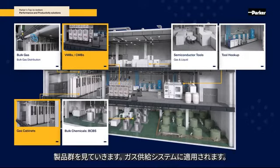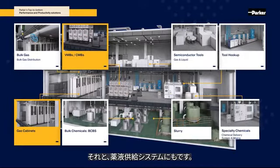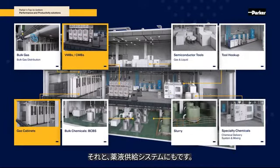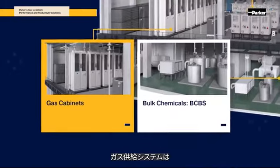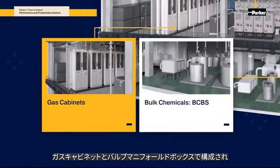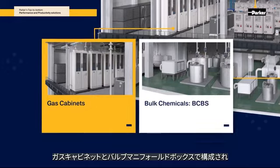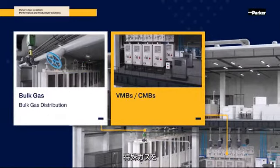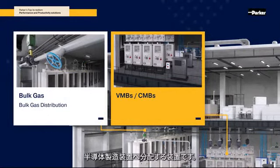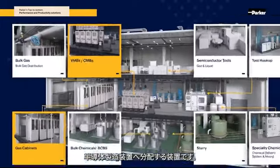In this video, we will look at products applied to gas supply systems and chemical supply systems. The gas delivery system consists of a gas cabinet and VMB, a device that distributes specialty gas to semiconductor manufacturing equipment.